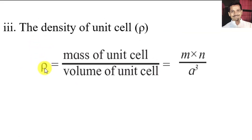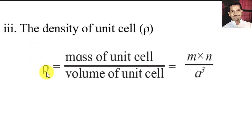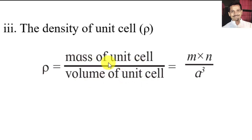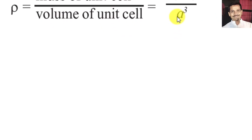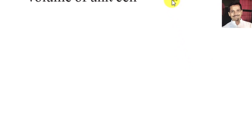We know that the density of the unit cell is equal to the mass of the unit cell divided by the volume of the unit cell. We have found that the mass of the unit cell is equal to m × n, and the volume of the unit cell is equal to a³.